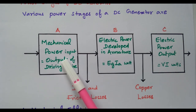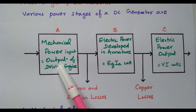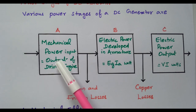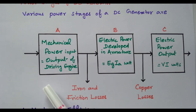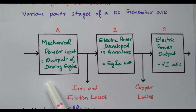The armature is connected to either a mechanical engine — a diesel engine, petrol engine, or another DC motor. So the armature part of a DC generator is connected through the mechanical power input. When the mechanical power input is given, that is the rotation, the driving machine rotates, and the armature of the DC generator also starts to rotate.